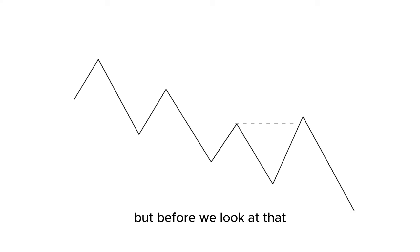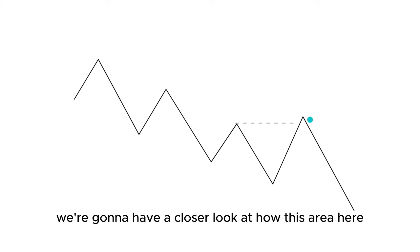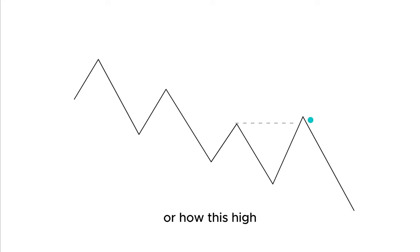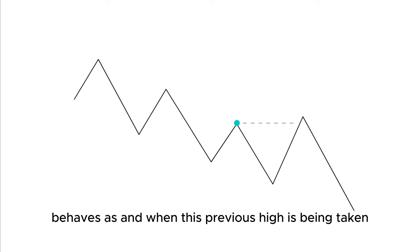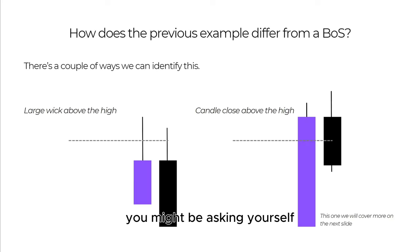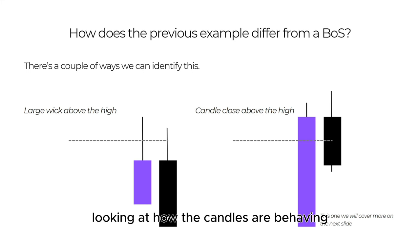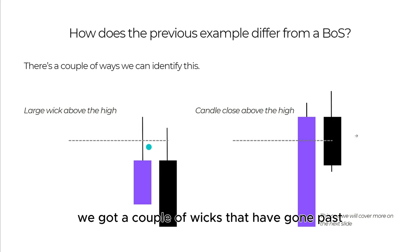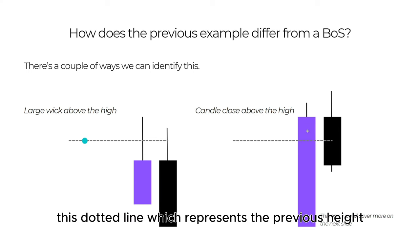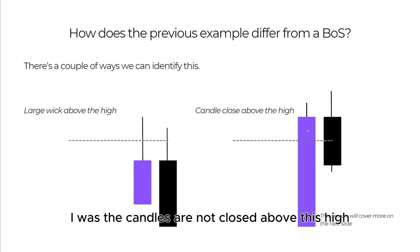Before we look at spotting liquidity grabs in advance, we're going to take a closer look at how this high behaves as and when this previous high is being taken. You might be asking how the previous example differs from a break of structure. This involves looking at how the candles are behaving as this high is being taken. In the first example, we can see a couple of wicks that have gone past this dotted line, which represents the previous high.